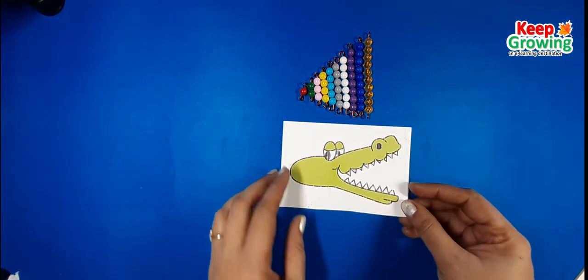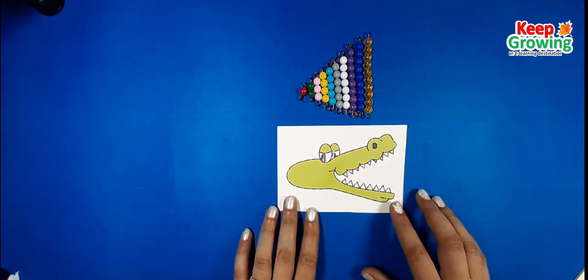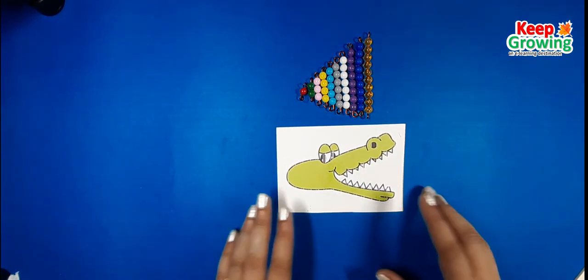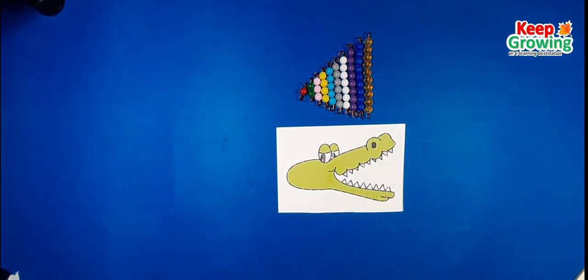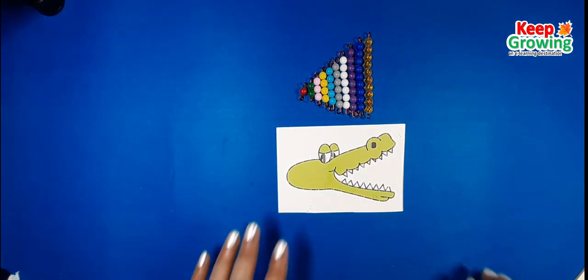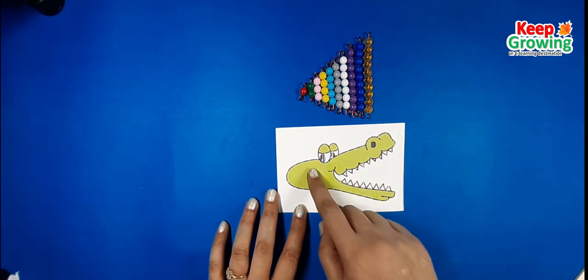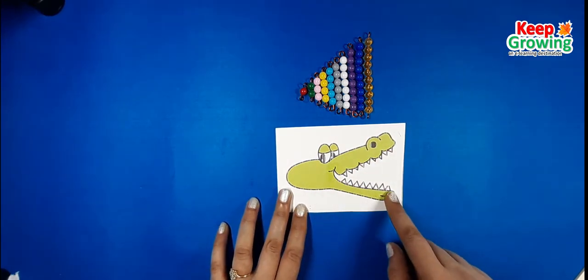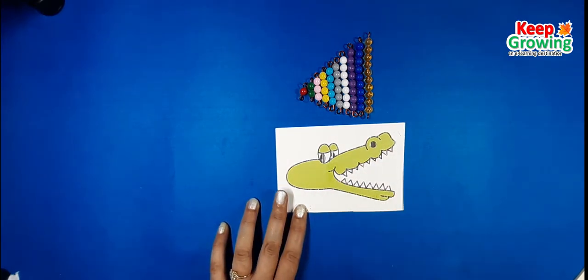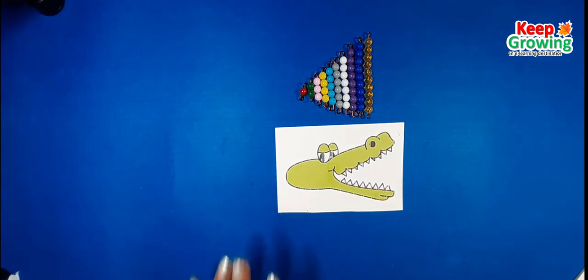Before we start, you can imagine that you have an alligator. His name is Ali the alligator. Ali the alligator always eats the bigger number. It means the open mouth of the alligator is always towards the bigger number.